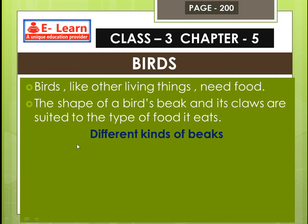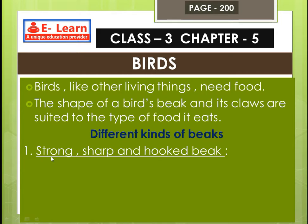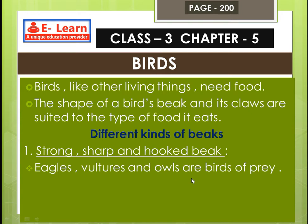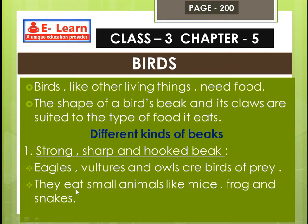We will learn different types of beaks. First: strong, sharp, and hooked beak. Eagles, vultures, and owls are birds of prey. They eat small animals like mice, frogs, and snakes.